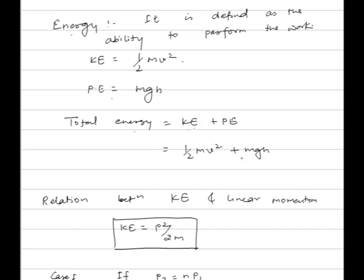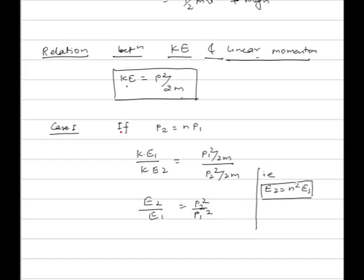The relation between kinetic energy and linear momentum: kinetic energy is given by p² upon 2m, where p is linear momentum.